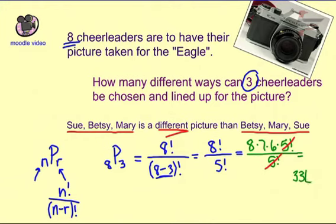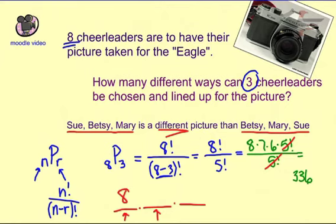8 times 7 times 6 gives us 336 different ways we can take this picture. That's how you do this problem using the permutation formula. Another way to think about this logically: we have 3 spots. For the first spot, there are 8 possible cheerleaders. For the second spot, since one is already taken, we have 7 left. For the third spot, we have 6 left — giving us that same 8 times 7 times 6.